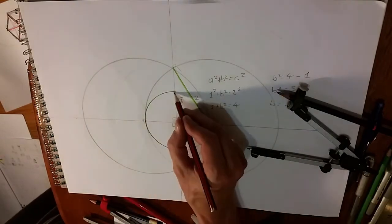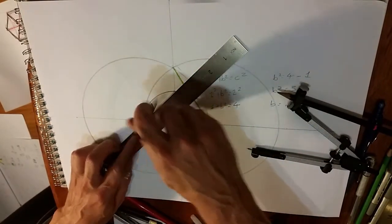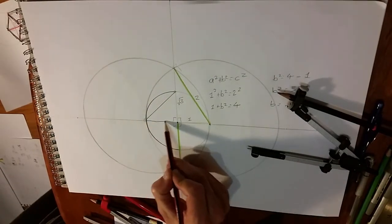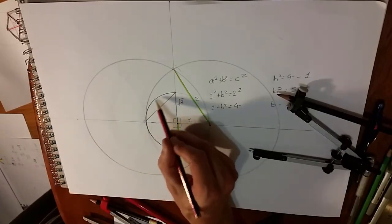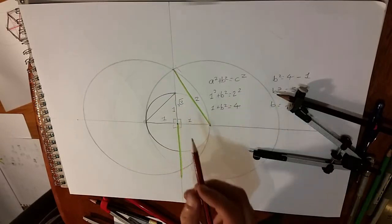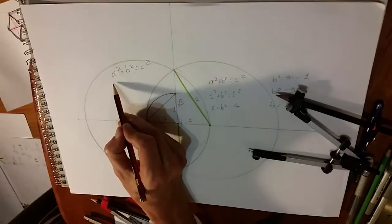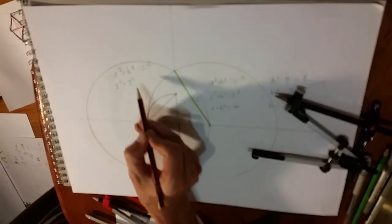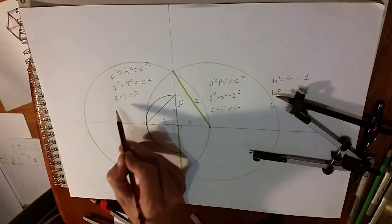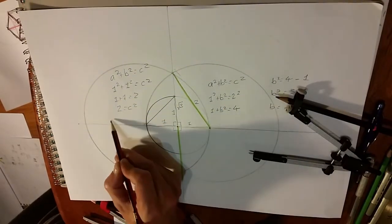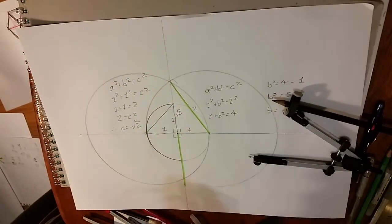Because from this point to here we've created a new triangle. We know this distance to be 1, and because of the arc we know it to be 1 as well. Therefore this equals the square root of 2.